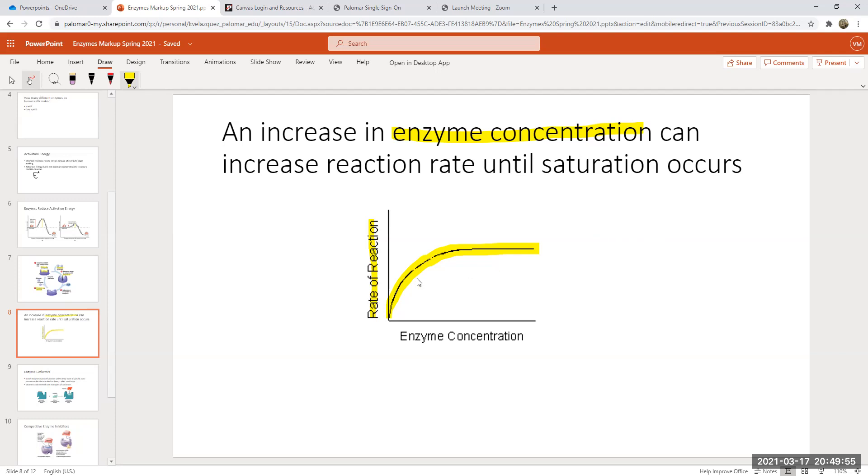When we're determining the rate of a reaction, you can do that two ways as well. You can look at the rate at which a reactant disappears, or you can look at the rate at which a product appears. Both of those would indicate that that reaction is taking place.